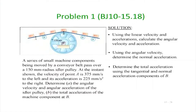Let me quickly go over the solutions to the problems. In this case, what we are told is that for this particular pulley, there is an idler pulley and we have a belt AB going over the pulley. The point of contact of the idler pulley with the belt is at B. At the instant shown, the velocity of point A is 375 millimeters per second to the left, and the acceleration is 225 millimeters per second squared to the right.